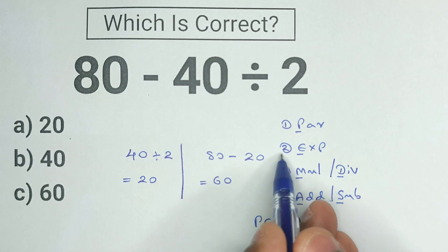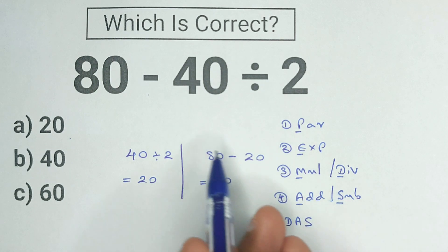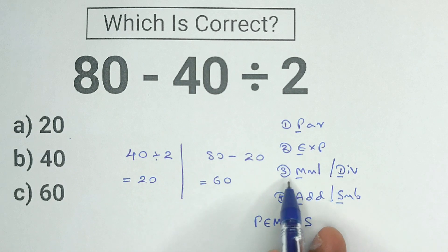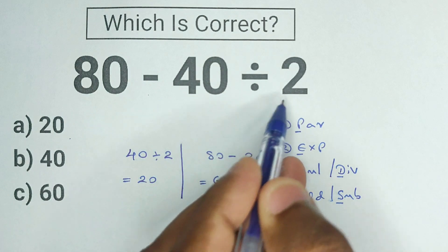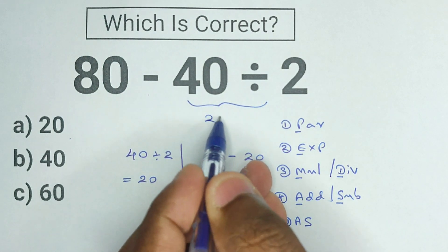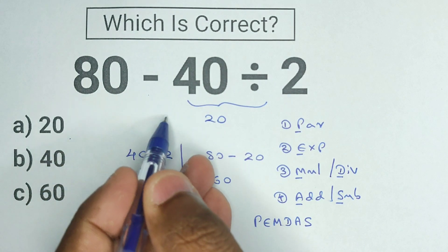Our next order of operation is exponents. Since we don't have any exponents in our expression, we can move on to our next order of operation, which is multiplying and dividing. And notice we have 40 divided by 2. We know 40 divided by 2 is equal to 20 and the rest of our expression stays the same.